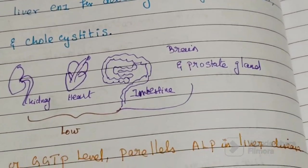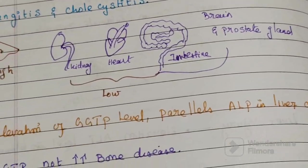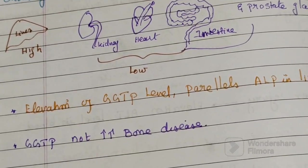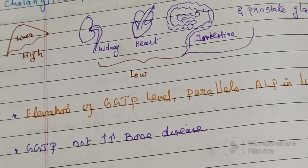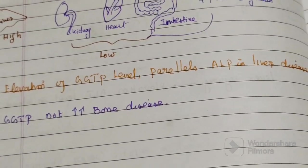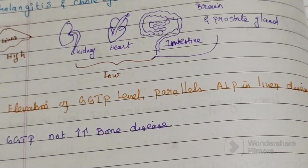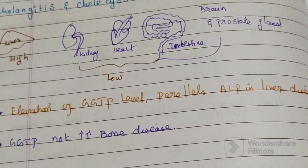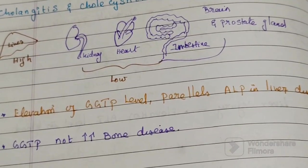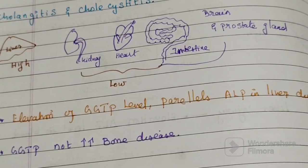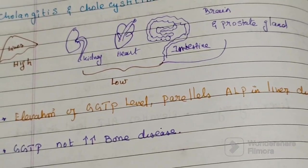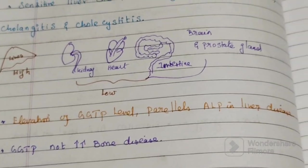Elevation of GGT level parallels that of ALP in liver disease, but GGT is not increased in bone disease. So if ALP is increased but GGT levels are normal, that indicates bone disease rather than liver disease.